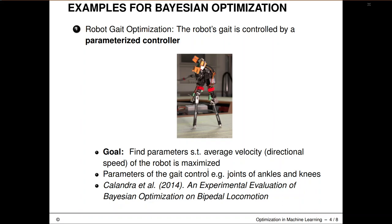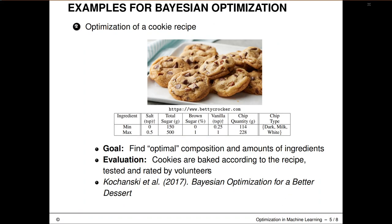If you want to know more about such an application, we've given you the reference here on the slide. Here's a more fun example that even has Bayesian optimization in the title: Bayesian optimization for a better dessert. So here they actually try to optimize a cookie recipe. The cookies are appealing to volunteers, to testers. They try to find the optimal composition and the amount of ingredients, which you can see here, how much salt is in the cookie, how much sugar is in there.